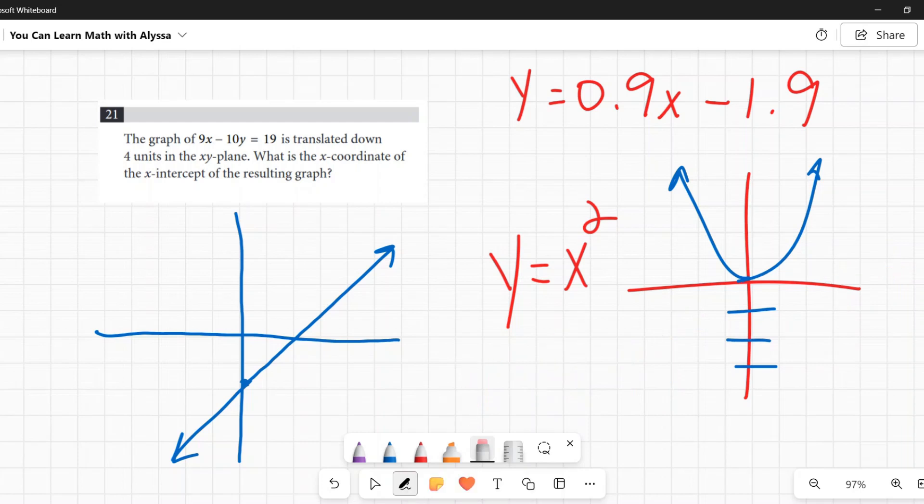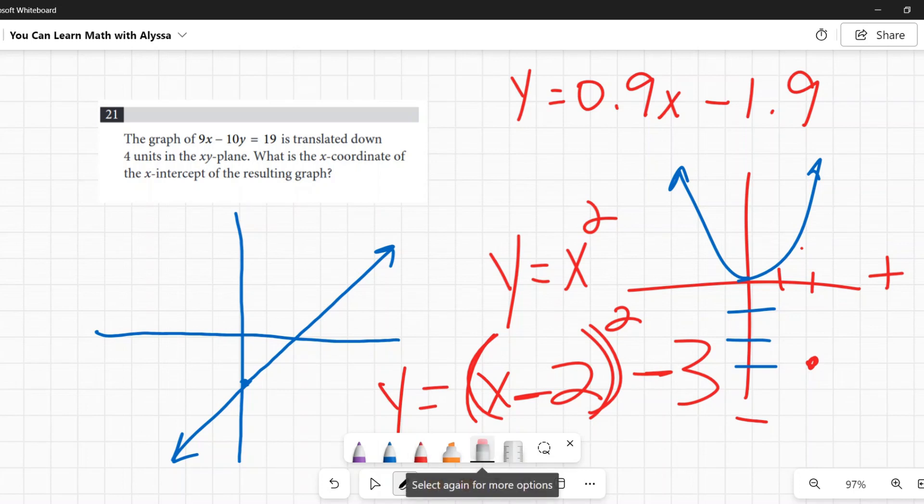So if I wanted to move this parabola two to the right, and then down three. To move towards the positive x, two, it is the opposite. It is minus two, and it goes in here. Then to move down three, it goes on the outside, minus three. This is a good pattern to learn. It comes up again and again.